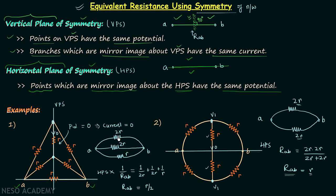Focus on these two resistors — they are in parallel and have the same value of 2R. In place of them we can have a single resistor of value 2R/2, that is R. So we have one resistor of R replacing them, and between A and B we now have two resistors of value R. Again dividing by 2, we finally get R/2.